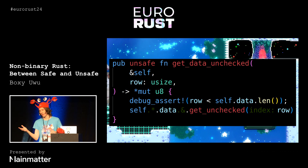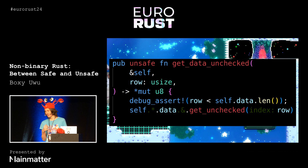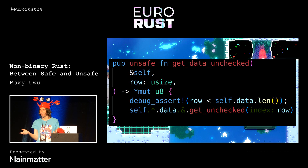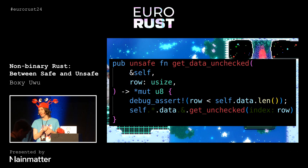Why don't we just use a borrow of a trait object here? The answer, maybe somewhat unsatisfyingly, is just because wide pointers are bigger than thin pointers, and that's probably bad for performance in a game engine with very tight performance requirements. So what we have is we're using a raw pointer and we've thrown away all of the lifetime guarantees we normally get.